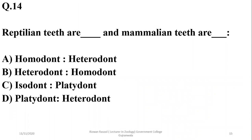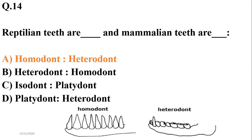Question 14: Reptilian teeth are homodont and mammalian teeth are heterodont. Reptilian teeth are usually homodont, while mammalian teeth have developed specialization by developing the condition of heterodont teeth arrangement. The right option is A.